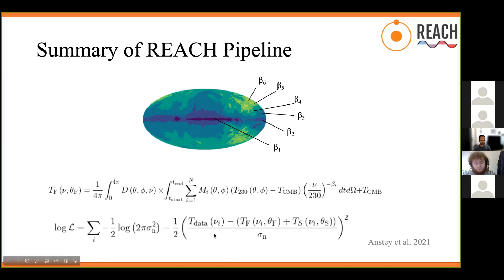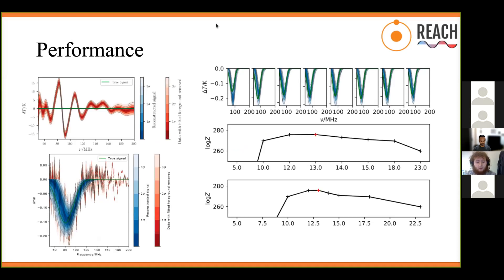We then fit that model to the data using a Bayesian nested sampling algorithm — PolyChord — to fit for the foreground parameters and the signal simultaneously. We use nested sampling because it provides access to the Bayesian evidence, which quantifies how well a given model fits the data, allowing us to determine the optimal number of parameters. Applying this pipeline to simulated data, we find that 13 sky regions gives the highest Bayesian evidence, and we're able to recover the injected signal from beneath those large distortions.